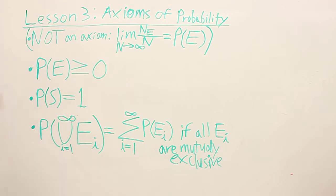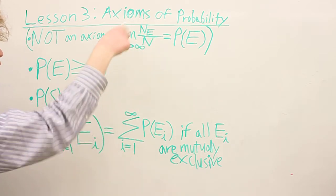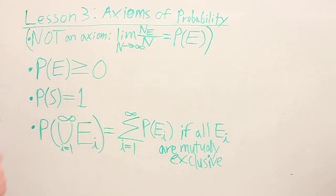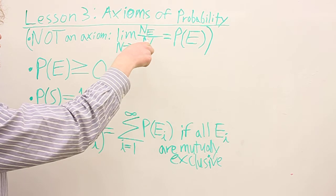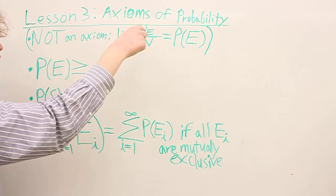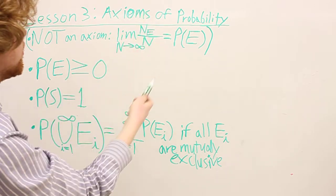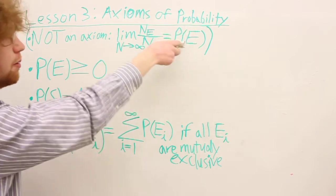First, something that's not an axiom is this limit here. This is the limit that was in the frequentist view, that as you repeat an experiment again and again, as the number of experiments goes to infinity, the proportion of outcomes in a certain event over the number of experiments converges to the probability of the event.